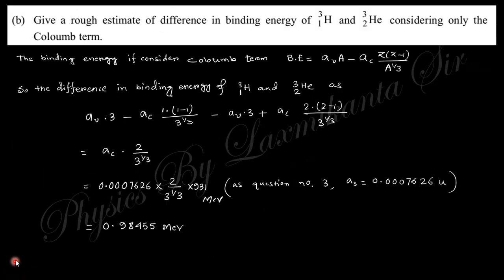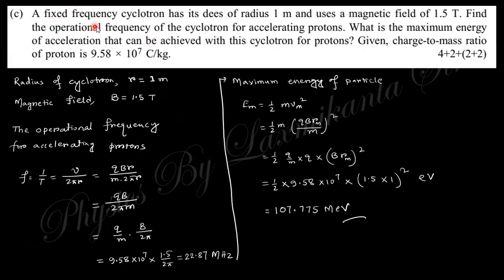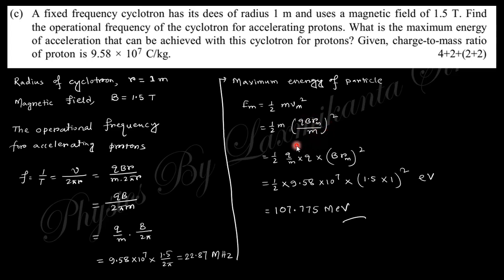Next, a fixed-frequency cyclotron has a given radius and magnetic field B = 1.5 Tesla. The operational frequency is f = qB / (2πm), where the charge-to-mass ratio q/m is given as 9.58 × 10⁷ C/kg. Substituting these values gives a frequency of approximately 22.87 MHz. The maximum kinetic energy of the particle is given by KE = (1/2)m(v_max)², where v_max = qBr/m, so KE = (q/m) × (BR)² × q/2, converted into MeV by dividing by the charge of the electron.